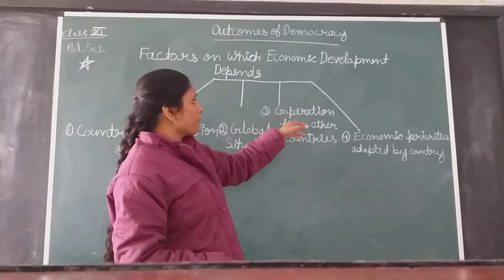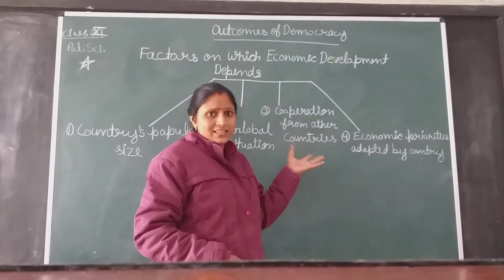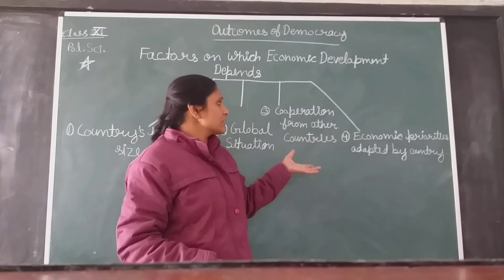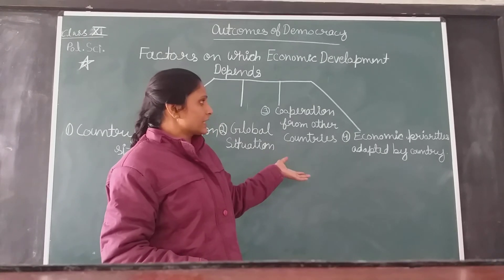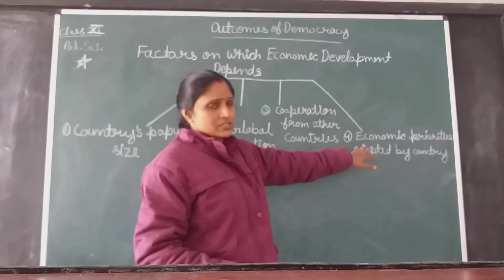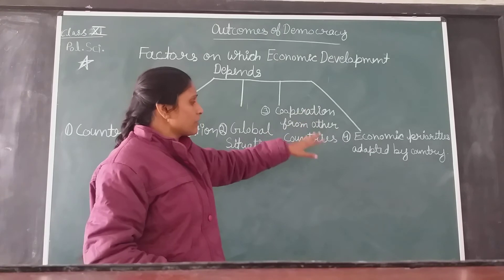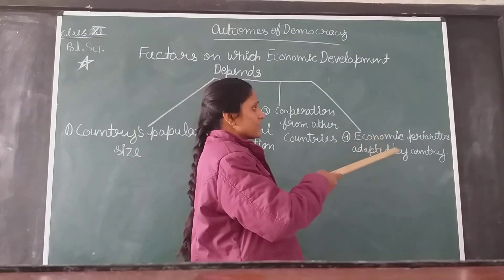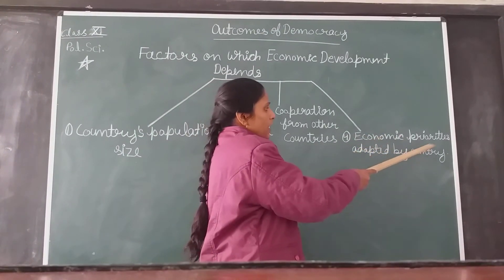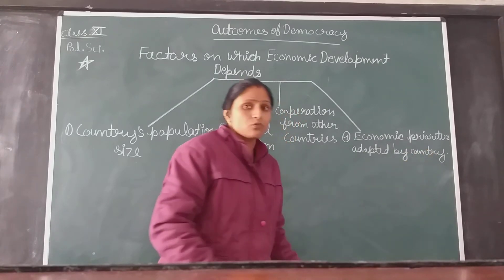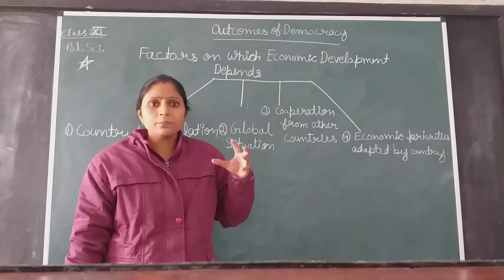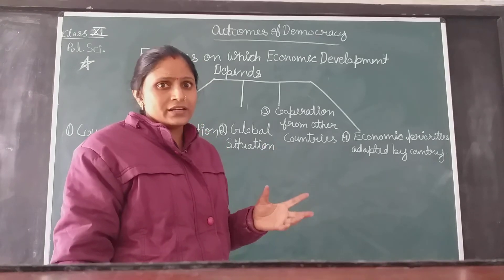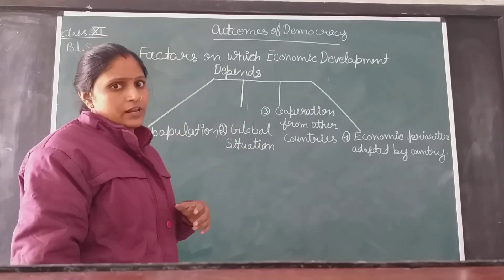The third one is the cooperation from other countries — what is the country's cooperation with other countries of the world? The fourth factor is the economic priorities set by that particular country, which will also define its economic development.